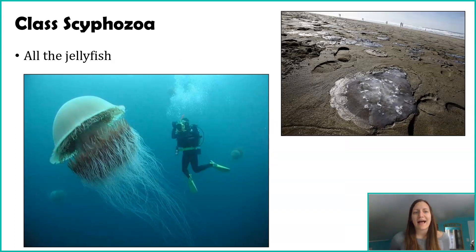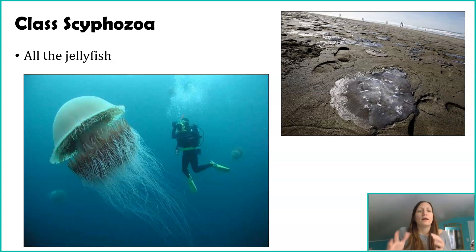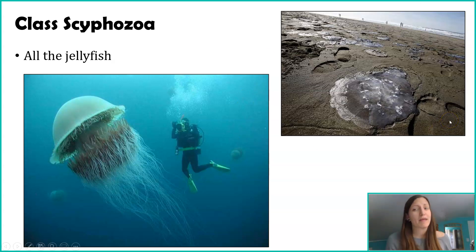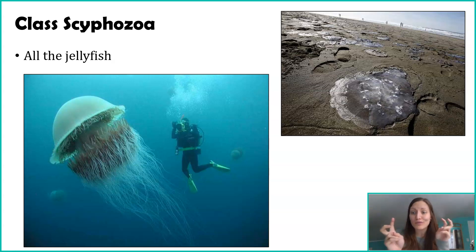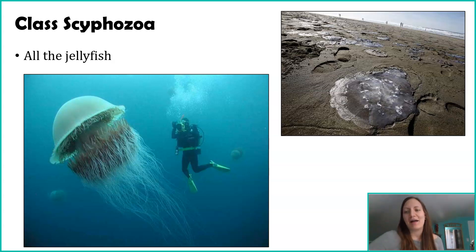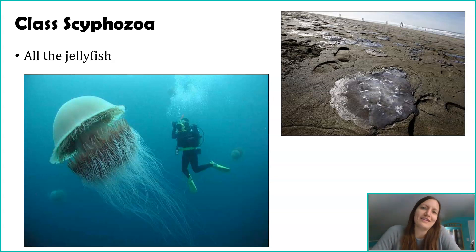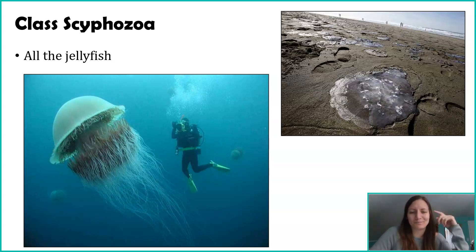The first class we'll talk about is Class Scyphozoa — these are specifically the jellyfish. Jellyfish can be really large, like the one on the left, but the ones on the right are moon jellies that you may have seen at Ocean City or Assateague. They bloom and reproduce in large numbers, washing up on shore. So this is the introduction to Scyphozoa: our jellyfish.